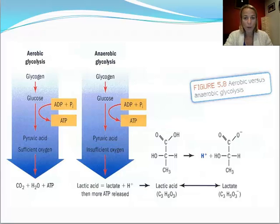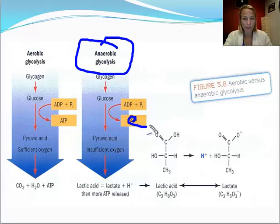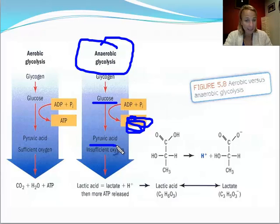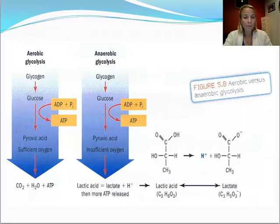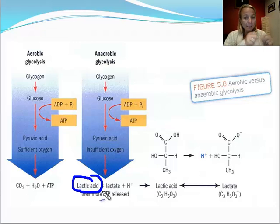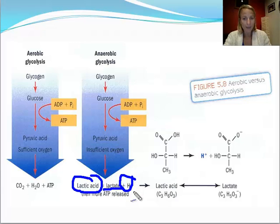This slide shows us the waste products. When we use anaerobic glycolysis to provide ATP, glycogen is broken down into glucose, then into pyruvic acid. With insufficient oxygen, we get our ATP. However, we also produce lactic acid as a by-product. Lactic acid is broken down into lactate — which is not the bad guy — and hydrogen ions. It's those hydrogen ions that, when they accumulate, interfere with muscle contractions and inhibit performance.